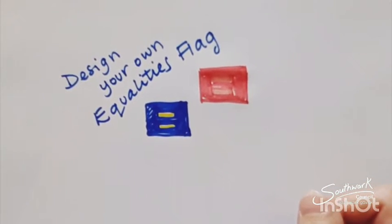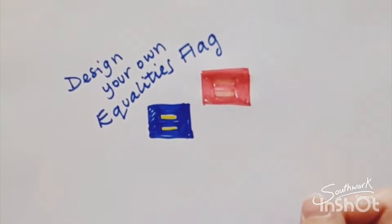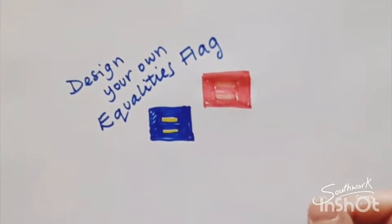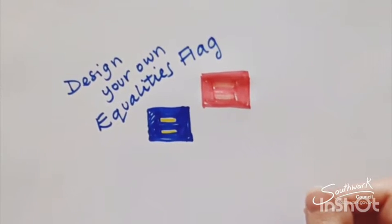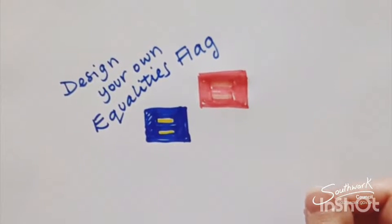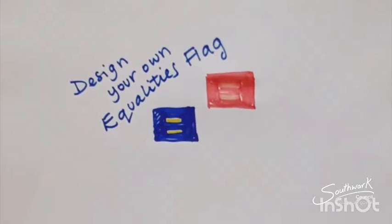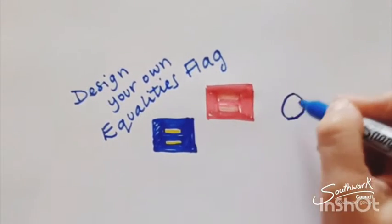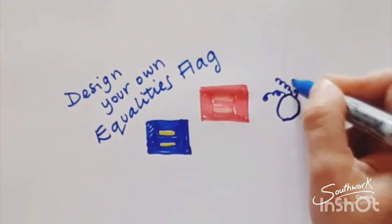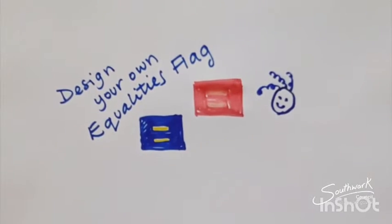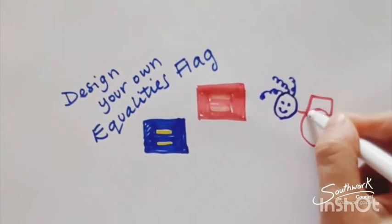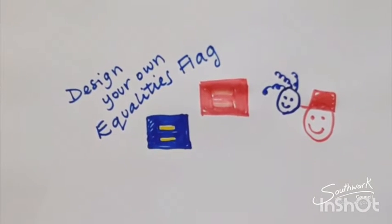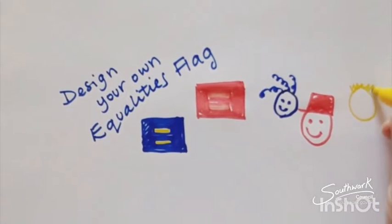Now, that's two versions of the equality flag. And we'd really like to see your ideas for a flag that represents equality for everyone. Think about what equality means to you. What does it look like? What words and symbols might you see in your flag? Does it mean everyone equal in the world? Think about people from different parts of the world — people that look different, maybe have different skin colour, different hair. Boys, girls, maybe who we love, how we look, what we think about.